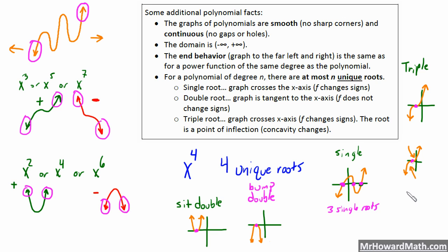So you could still have one that does this. And you have a, draw the axis in here. You could have a triple root right here. Where you're concave up here, and now you're concave down here. So it's just a change in concavity occurs when you have a triple root.